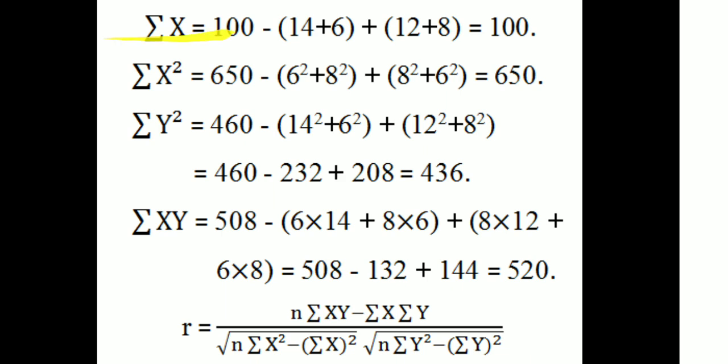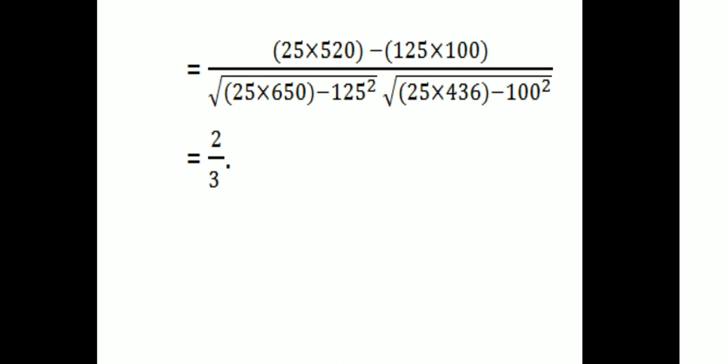Now we substitute into the correlation coefficient formula R equals n times summation xy minus summation x times summation y, divided by the square root of [n times summation x-squared minus (summation x)-squared] times [n times summation y-squared minus (summation y)-squared]. Substituting: 25 times 520 minus 125 times 100, divided by square root of [25 times 650 minus 125-squared] times [25 times 436 minus 100-squared]. This gives R equal to 2/3.